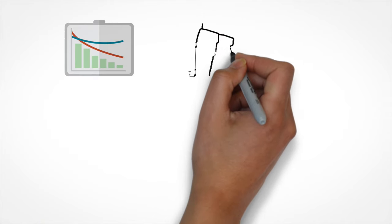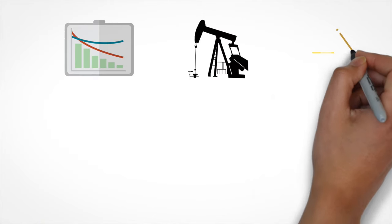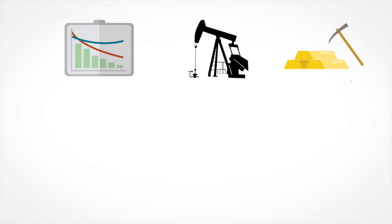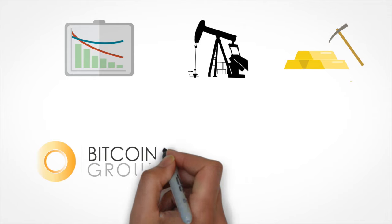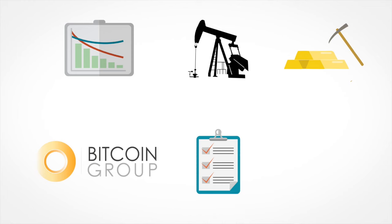Stock markets have a long history listing oil and gold mining stocks for investors. Yet, prior to Bitcoin Group, there were no listed stocks for investors that wanted to share in the upside of mining for Bitcoins.